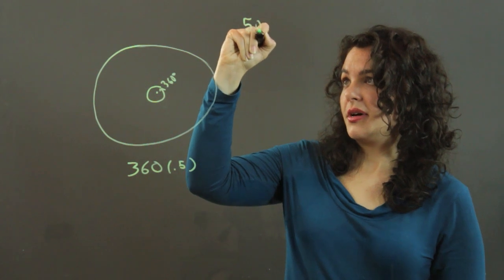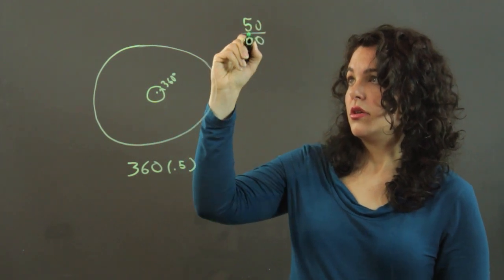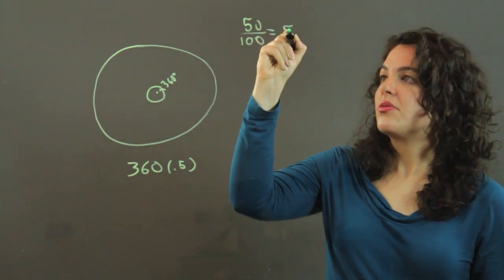Remember, percent means divide by 100. So 50 divided by 100 is 0.5.